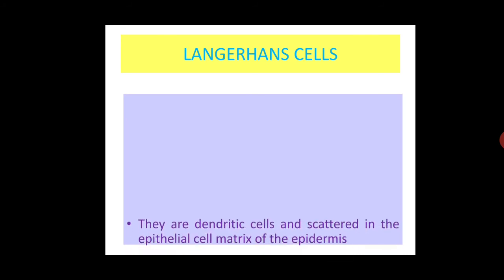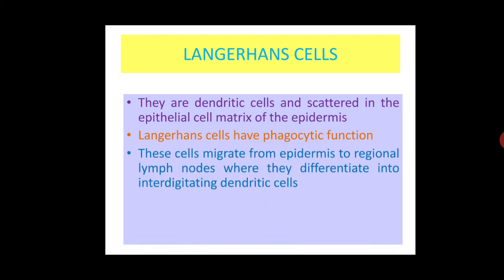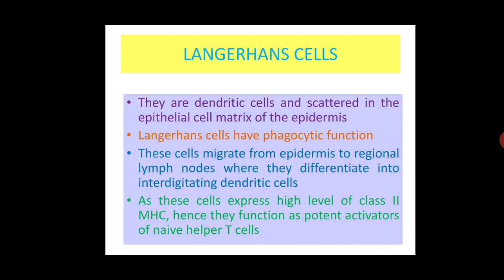Keratinocytes can also be induced to express class II major histocompatibility complex molecules and act as antigen-presenting cells. Langerhans cells are dendritic cells scattered in the epithelial cell matrix of the epidermis. They have phagocytic function and may migrate from the epidermis to regional lymph nodes, where they differentiate into interdigitating dendritic cells. As they express high levels of class II MHC, they function as potent activators of naive helper T cells.